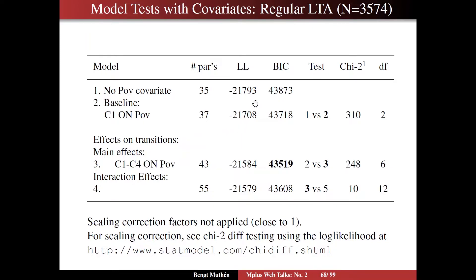We can do a likelihood ratio test — a quite kosher test here. 2 times the difference of the log likelihoods is 310 with 2 degrees of freedom, the difference in the number of parameters, which means that we definitely should choose model 2 over model 1. Then we take a look at whether there are any significant effects on transitions, starting with the main effect model, run number 6, where we regress all of C1 through C4 on poverty. We see that the likelihood is better, and the BIC is better as well.